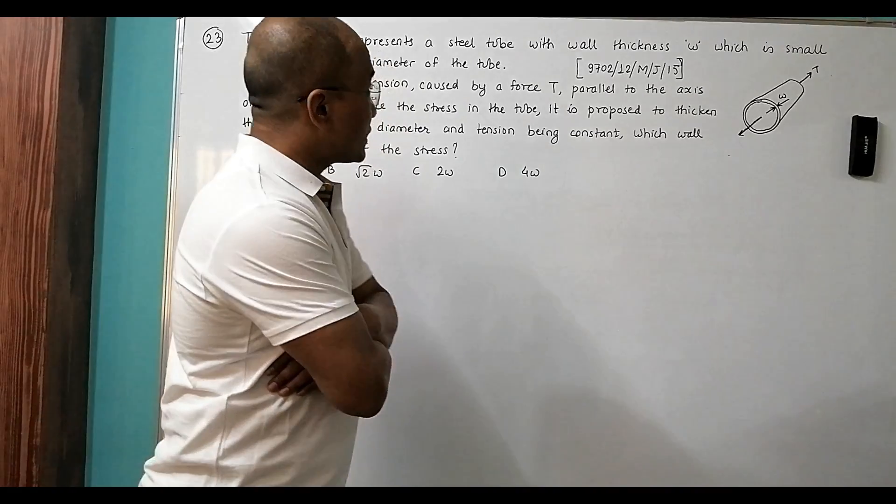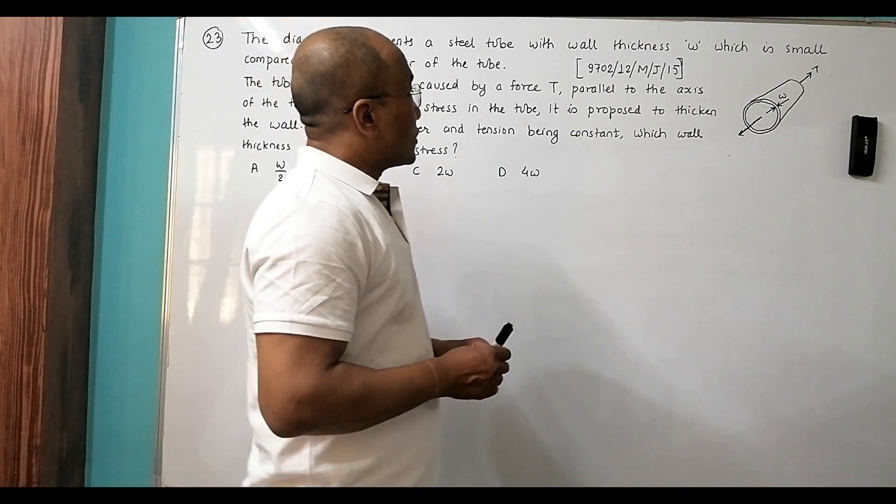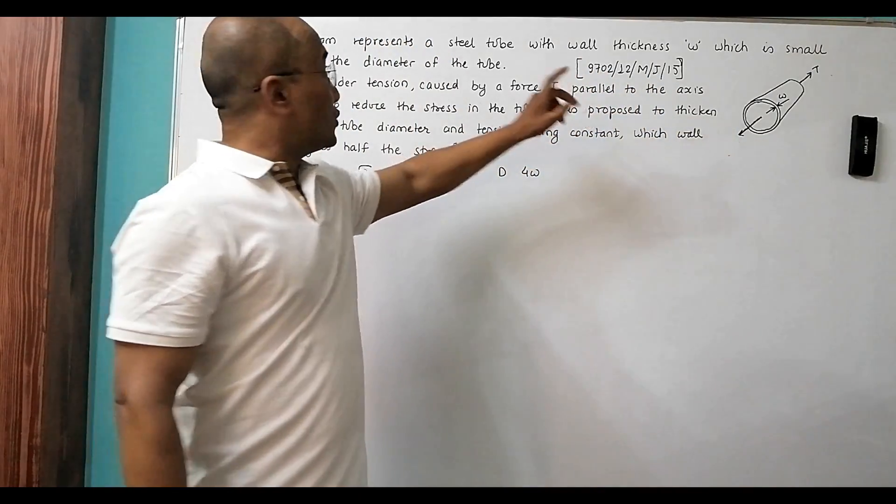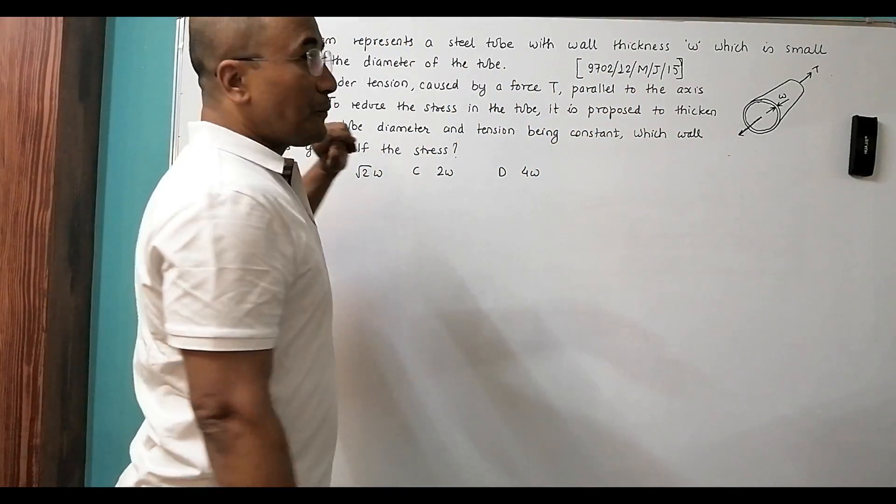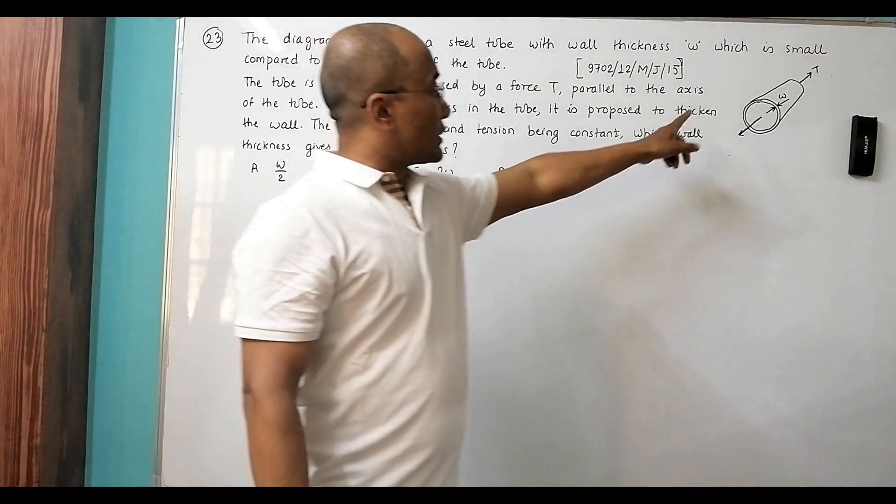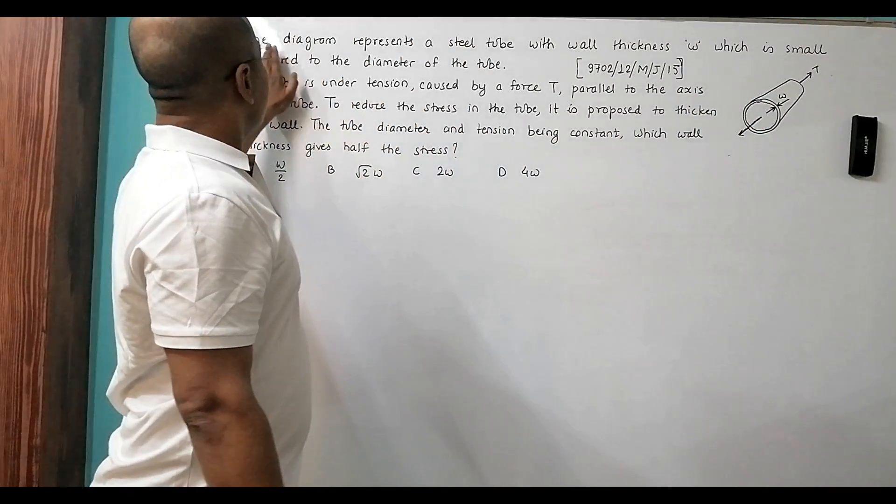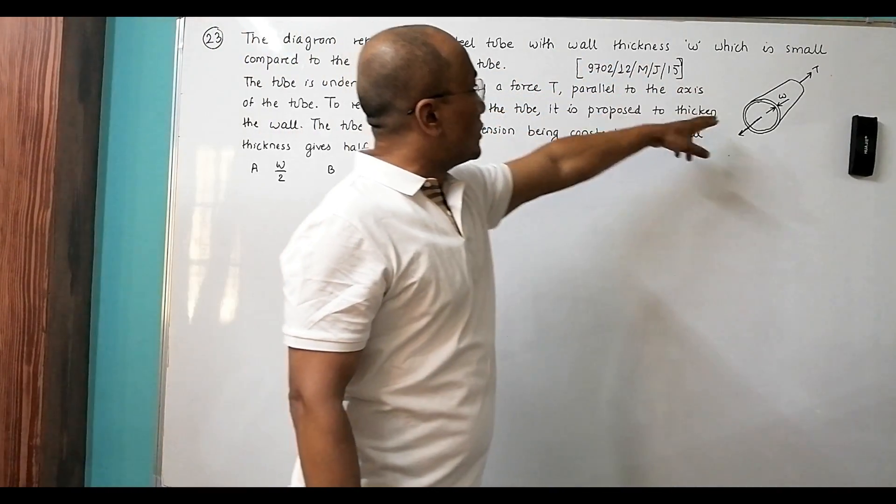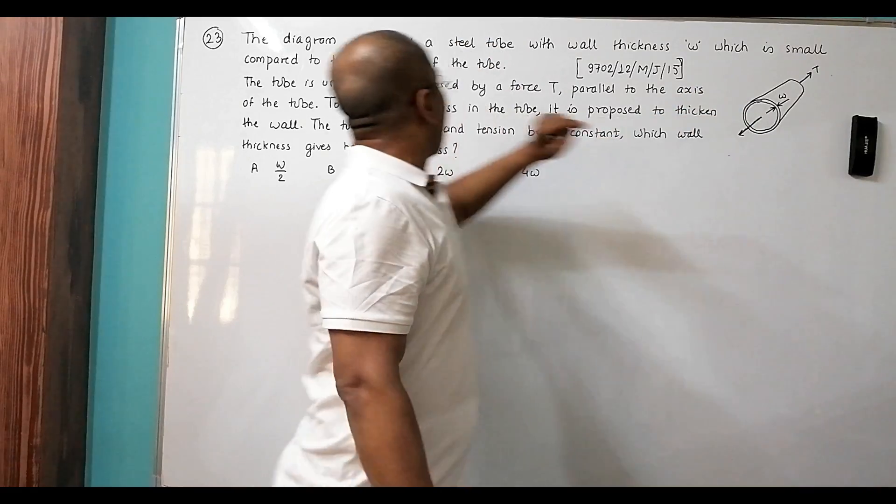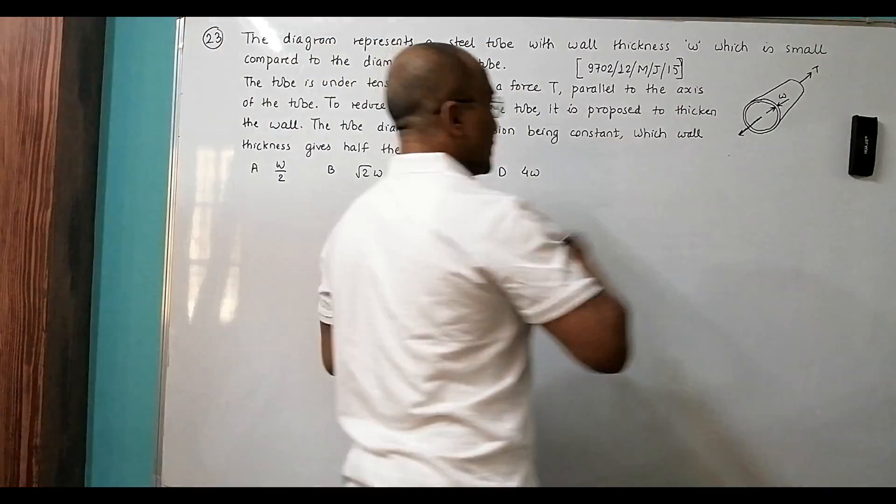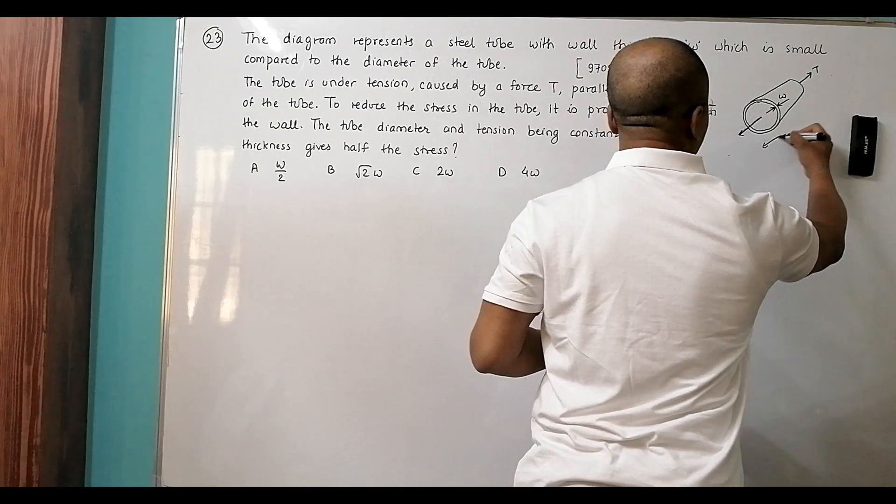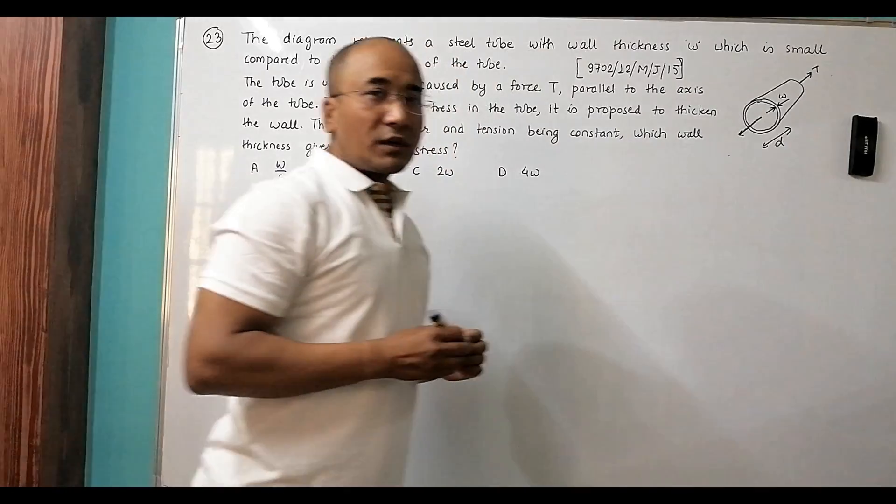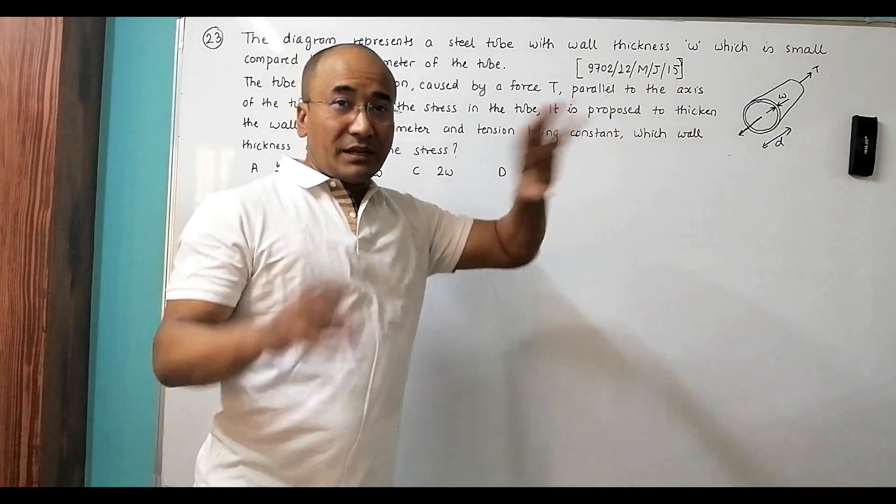That's why I am correcting this on the board. Previously I had done it on paper. This belongs to 2015 May/June Paper 12, question number 23. The diagram represents a steel tube with wall thickness w, which is small compared to the diameter of the tube.